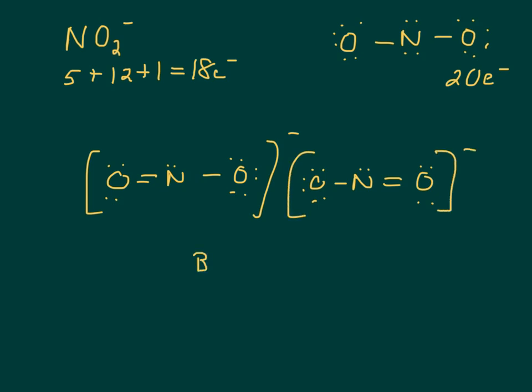And the bond order is, what's the average of two and one? A double bond and a single bond. The average of that is one and a half. And again, you can use that trick. A total of three lines in two places. One and a half.